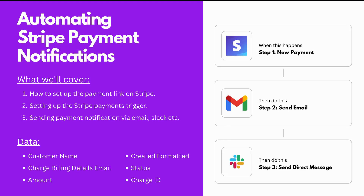And via Slack. The specific data we're going to be sending from Stripe is: the customer name, the charge billing details email (which is the customer email), the payment amount, the created formatted date, the status (which tells us whether the payment succeeded or not), and finally the charge ID. With that said, I'll see you in Stripe.